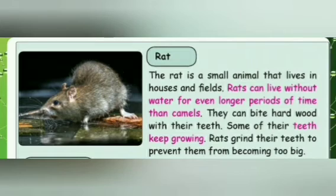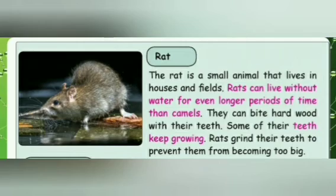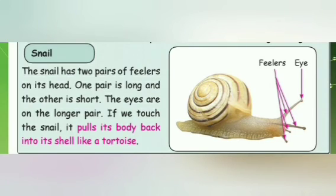A rat is a very small animal which lives in houses and even in fields. Rats can also live without water for a longer period of time than camels. They can bite hard wood with their teeth, and some of their teeth keep on growing — rats grind their teeth to prevent them from becoming too big. The snail has two pairs of feelers on its head: one pair is long and the other is short. The eyes are located on the longer pair. Like a tortoise, if you touch a snail it pulls its whole body back into the shell to protect itself.